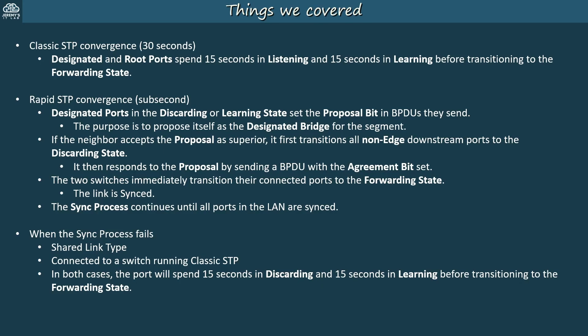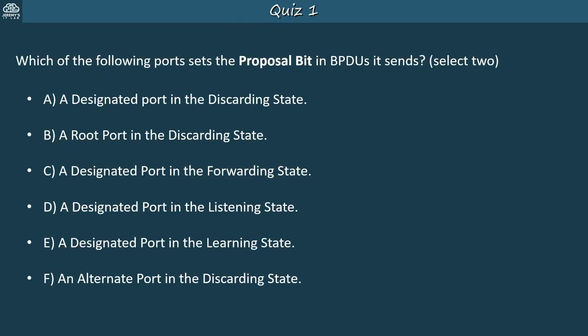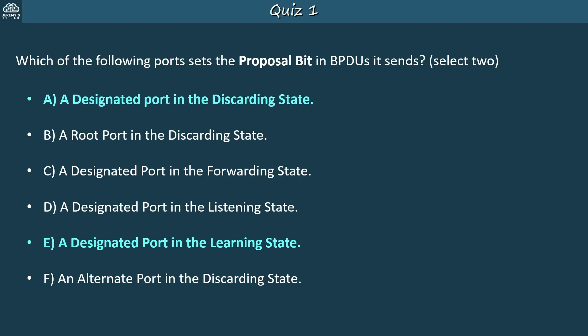Now let's do a quick quiz. Question 1: Which of the following ports sets the proposal bit in BPDUs it sends? Select 2. The answers are A — a designated port in the discarding state — and E — a designated port in the learning state. Only designated ports send proposal BPDUs, so root port options are ruled out. A designated port that has already reached the forwarding state has no need to initiate the sync process, so it doesn't set the proposal bit. And the listening state doesn't exist in rapid STP — if a port is in the listening state, the switch is running classic STP.